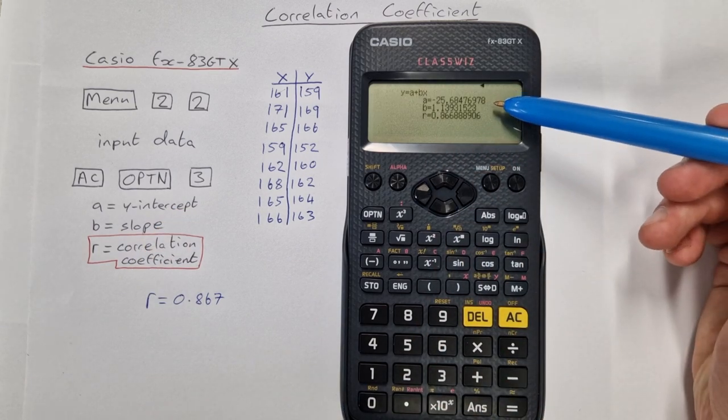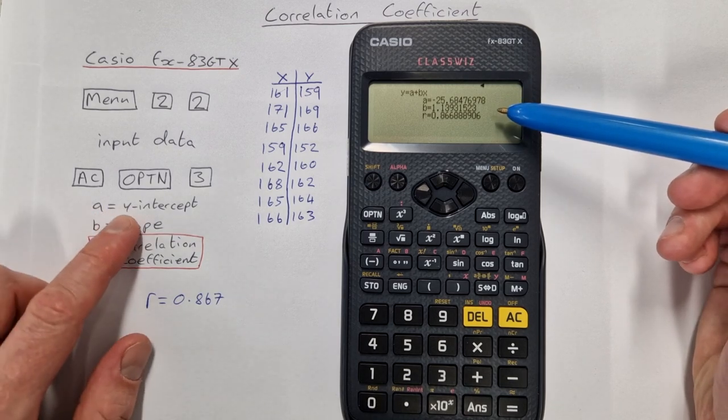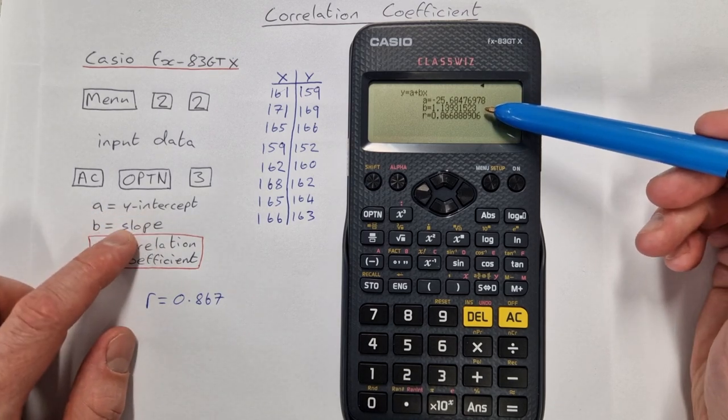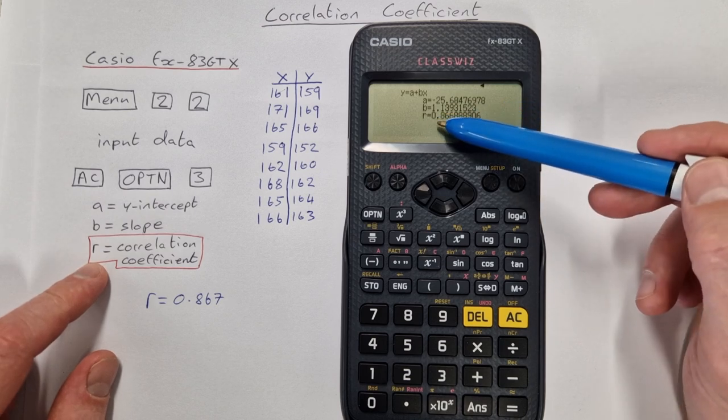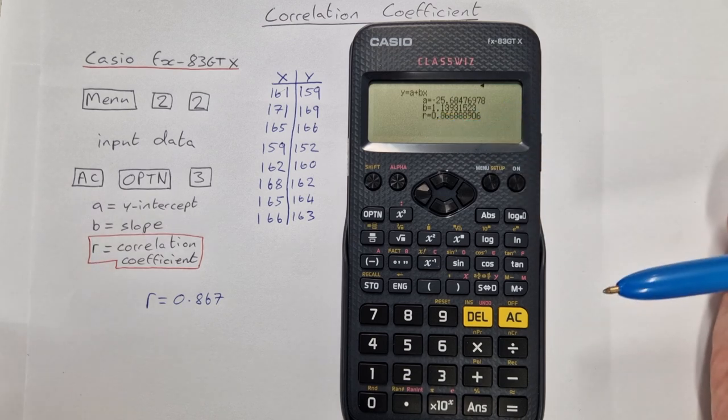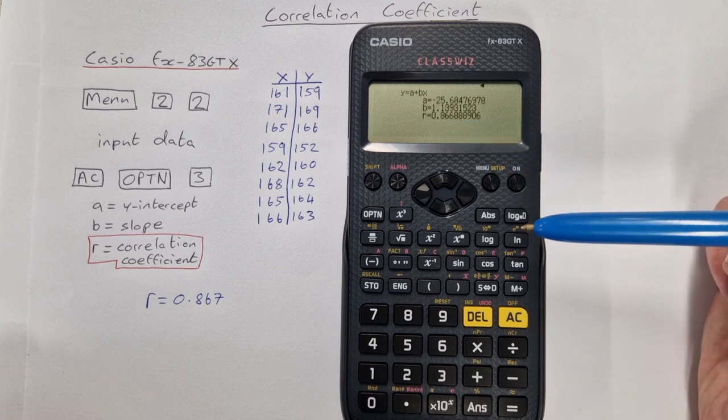You get three different numbers here. You get A which is your y-intercept, you get B which is your slope, and you get r which is your correlation coefficient. That's what we're interested in this calculation: r, or correlation coefficient.